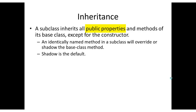It says public properties, but we're going to see that that's not specifically true — there might be other possibilities. It'll also inherit methods, except for the constructor. If you create a new method in the subclass that's identically named, it will override or shadow. If you haven't specified that it will override, it's going to shadow instead. Shadowing means both methods exist and the old one can still be referred to using the myBase keyword.